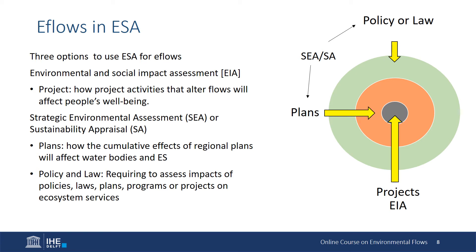At other levels of decision making, strategic environmental assessment can be used to determine how the direct, indirect, and cumulative effects of regional plans will affect water bodies and ecosystem services, or how the actions or strategies outlined in policies, programs or laws could directly or indirectly modify human activities in a way that would affect the integrity of ecosystems and the provision of services.